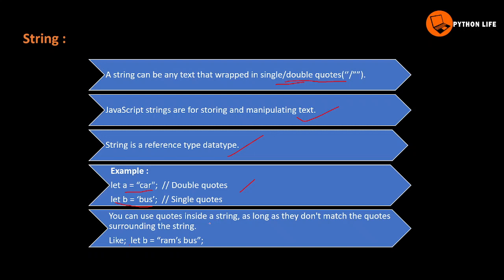For example, you can use quotes inside a string, as long as they don't match the quotes surrounding the string. If you have a variable, like 'The ram's book — it's not my problem', it has a single quote inside. So, for example, let b equal to byte with double quotes. There are no single quotes inside. If you have double quotes inside, it will make an error.